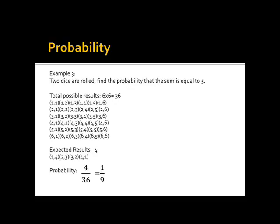And for the expected results, there are 4: because there are 1 and 4, 2 and 3, 3 and 2, and 4 and 1. So the probability that the sum of two dies that are rolled is equal to 5 is 4 over 36, which is also equal to 1 over 9.